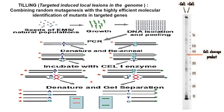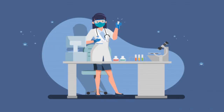After cleavage, both homoduplex and heteroduplex fragments are run on a gel, where we find differences in the DNA band patterns. Through this, we are able to identify single nucleotide polymorphism.